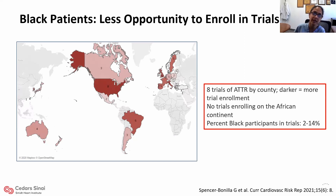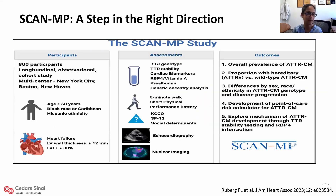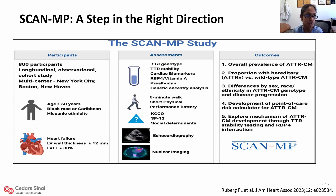Thankfully, we have a trial called SCAN-MP, which is a step in the right direction. It will involve a longitudinal observational cohort, multi-center, of 800 participants — older patients who are Black, Caribbean, or Hispanic with increased left ventricular wall thickness — who will undergo extensive evaluation for cardiac amyloidosis to better understand prevalence, differences by sex, race, and ethnicity, and the role of active ascertainment in high-risk populations.